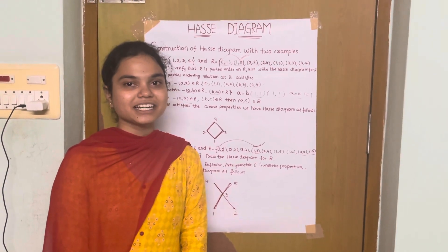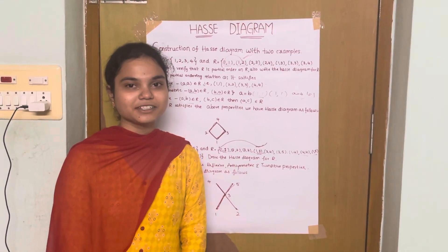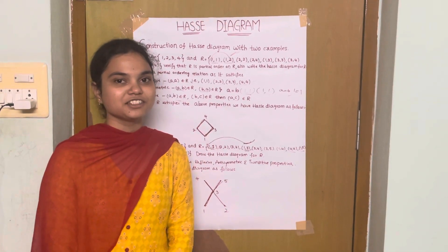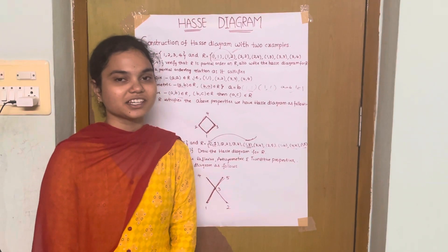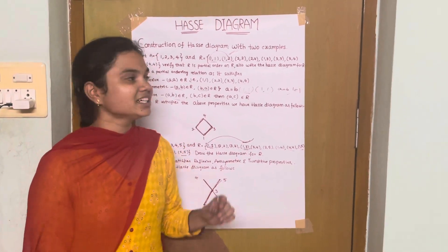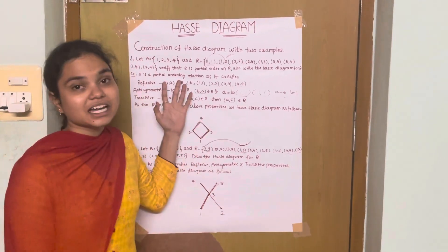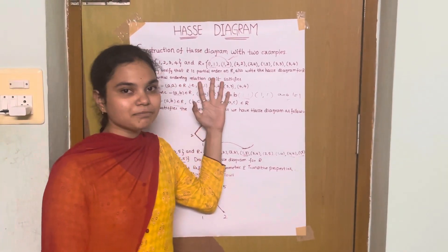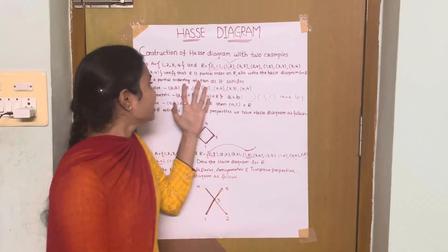Hi everyone. I am Leela Sri Salthi bearing role number 22BQ1A1 to B9 from ITC. My topic is Hasse Diagrams. Hasse Diagrams are the representation of a poset in pictorial form.